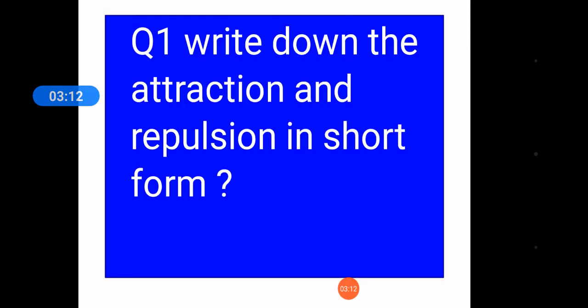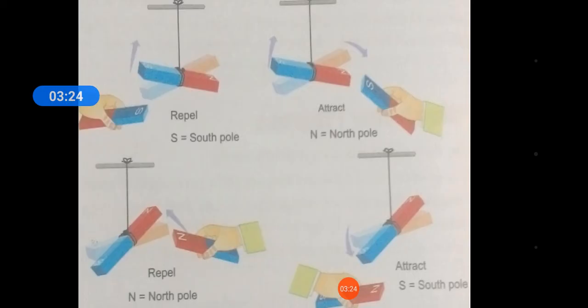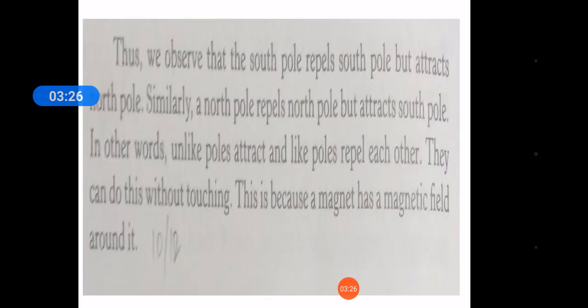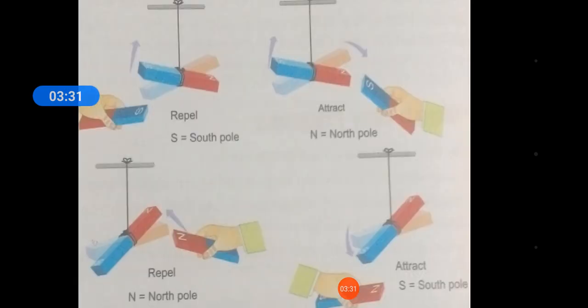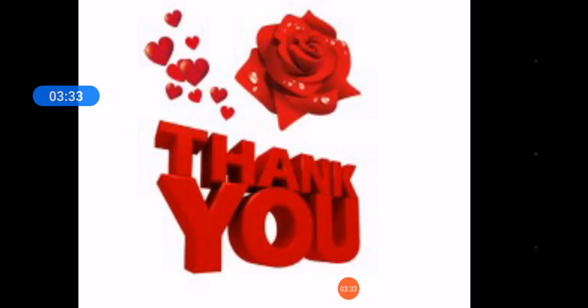Question 1: Write down the attraction and repulsion in short form. You need to write attraction and repulsion in short form. You have to remember this topic very well. This is a very important topic about attraction and repulsion. So thank you so much and Allah Hafiz.